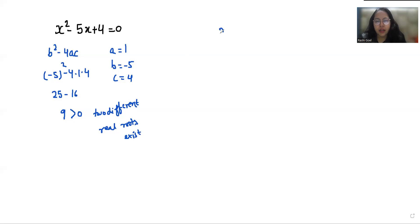Now x square minus 5x plus 4 equals 0. This is our equation. First we are going to solve with middle term split method. So we can write this middle term as negative 4x, negative x plus 4 equals 0.